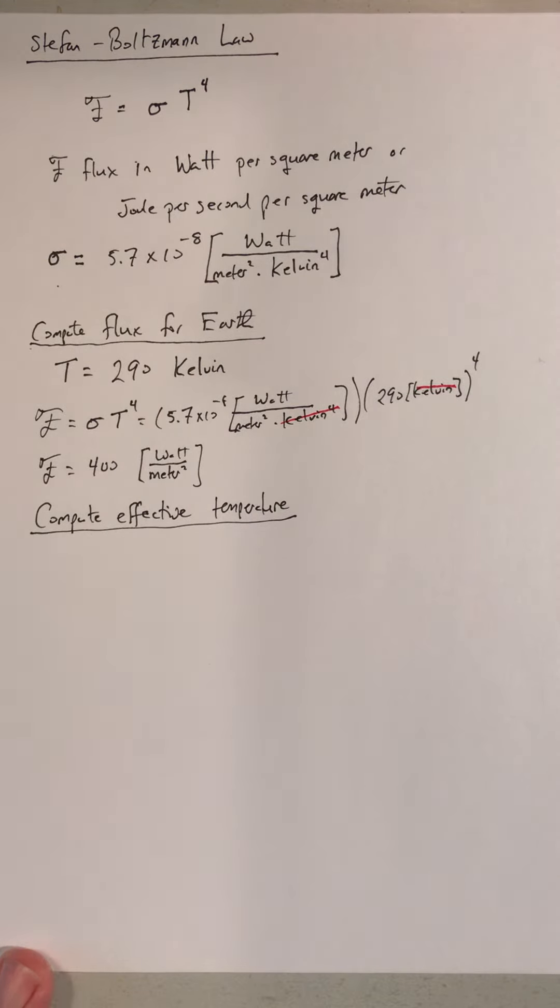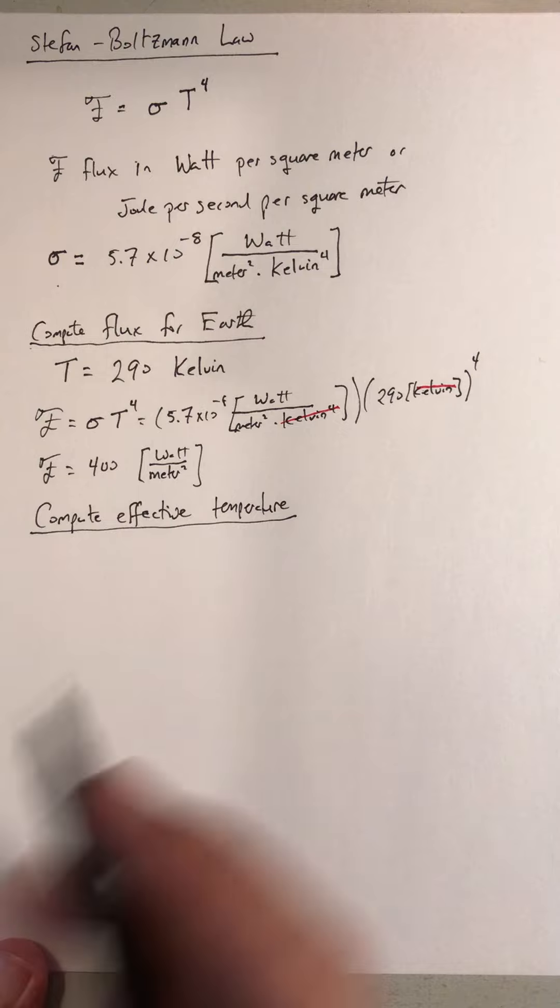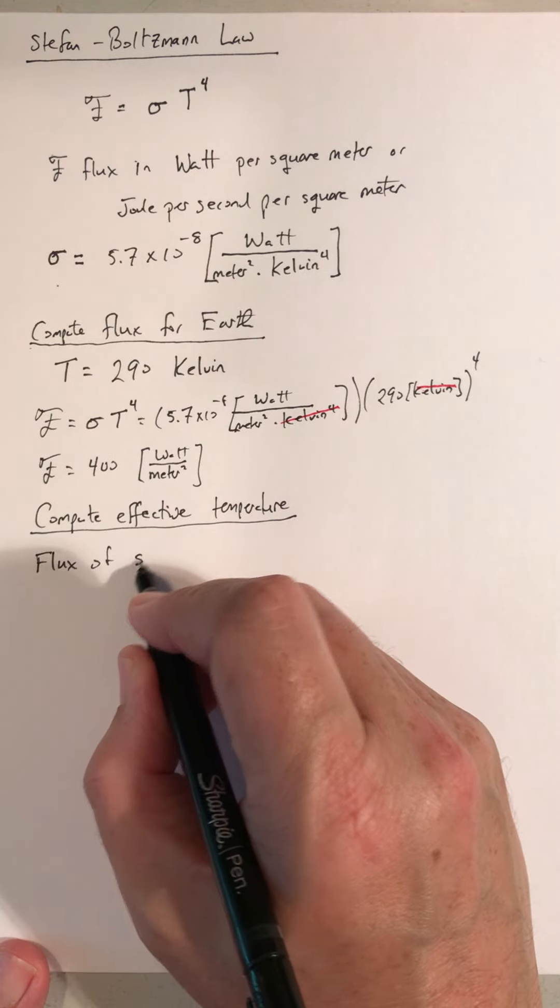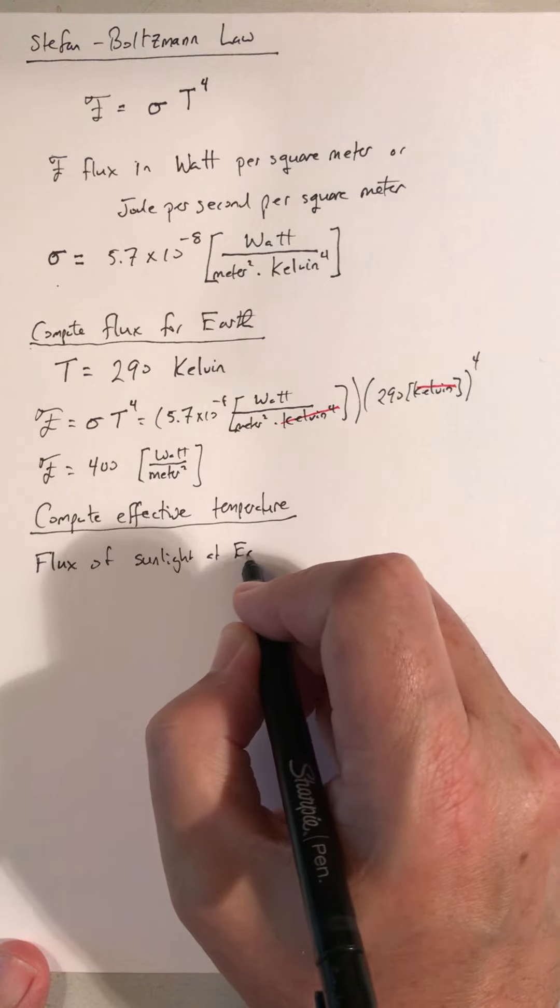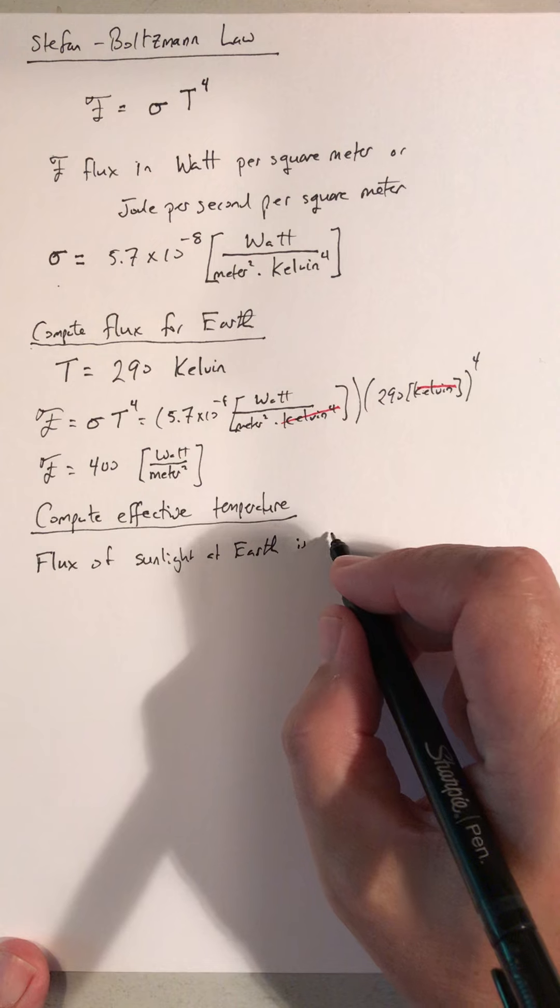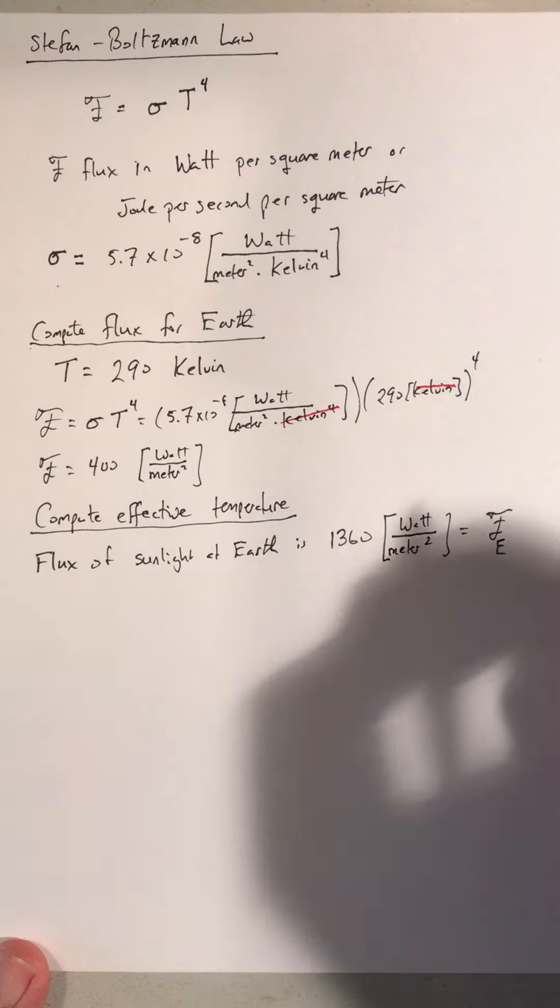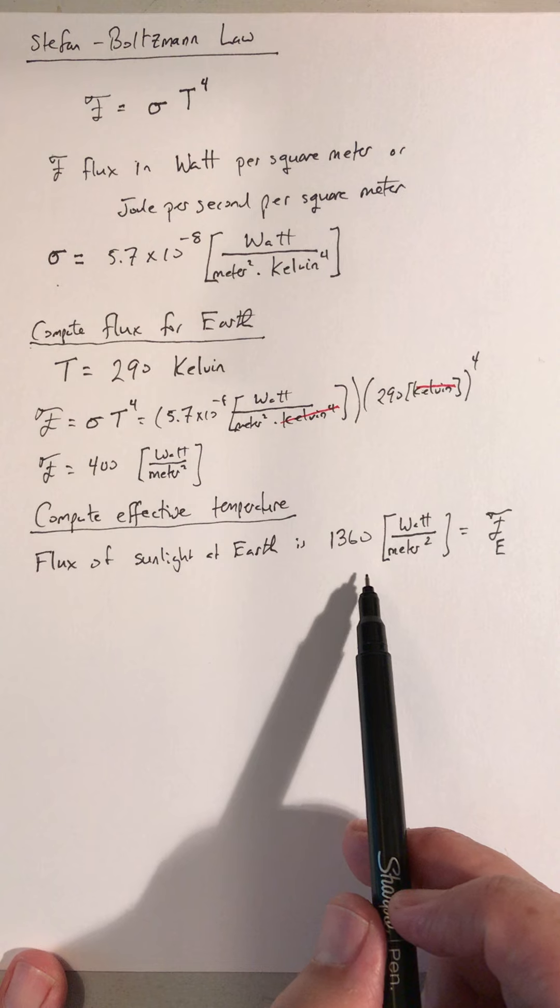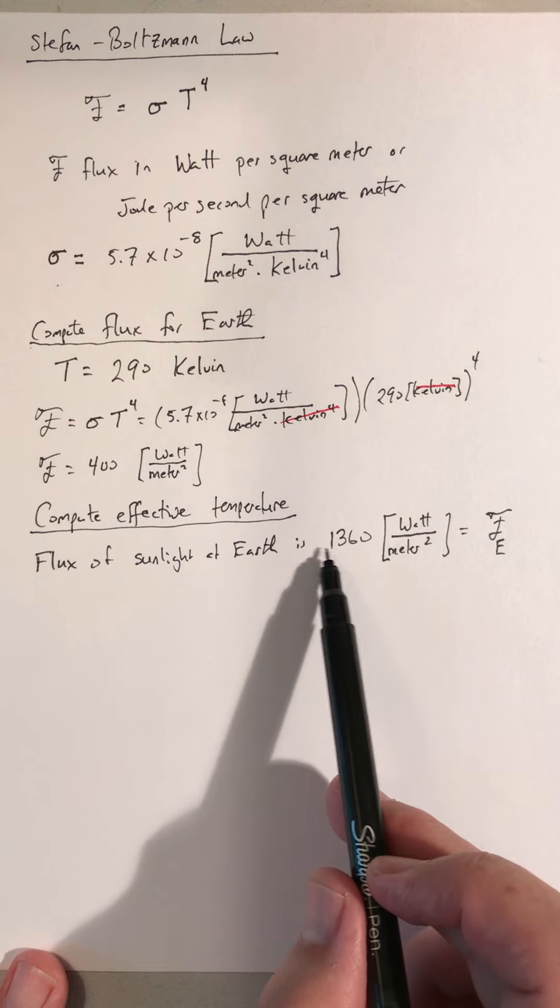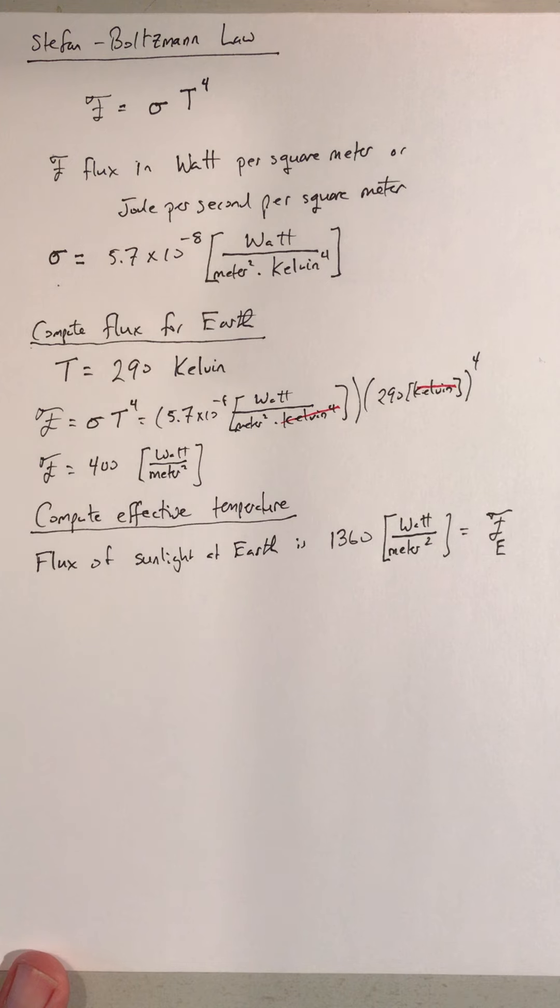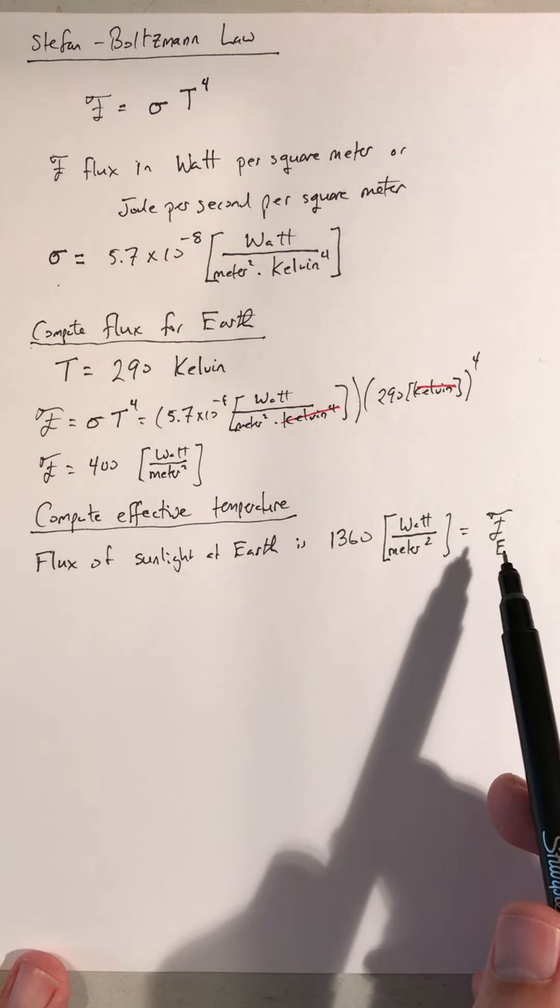Alright, so for this, for the example, I want to compute what the surface of the Sun, what its temperature is. And we're going to start from something we can measure here on Earth. Flux of sunlight at Earth is 1360 watts per square meter. So we'll call that the flux at Earth. So every square meter of Earth's surface is getting 1360 watts. So 1360 joules every second. So quite a bit of energy. So that is the flux here at Earth.